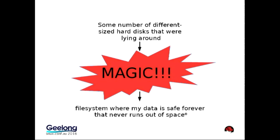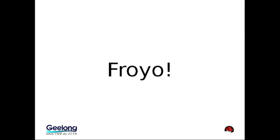If any of you are familiar with the Drobo product, Froyo draws inspiration from that. You have some number of disks laying around — they're not the same size. You just give them all to something, and from that something comes a file system that does everything: your data is safe, it never runs out of space, and you don't have to worry about tweaking parameters. If something goes wrong, it handles it. Drobo plus free plus YOLO is Froyo.